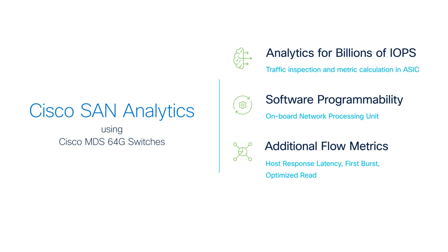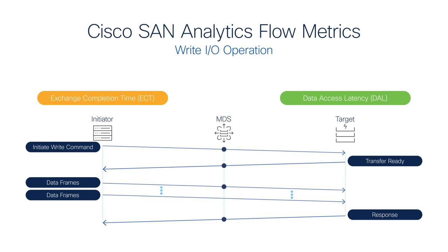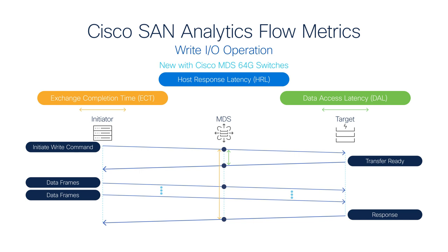Thanks to the programmable NPU. The third benefit of Cisco SAN analytics using the 64-gigabit MDS switches is that there are many new metrics to help with accurate troubleshooting. For example, consider an NVMe write operation. The 32-gigabit MDS switches already collect the Exchange Completion Time (ECT), which is the total time to complete an I/O operation, and the Data Access Latency (DAL), which is the time taken by a storage array to send the first response.